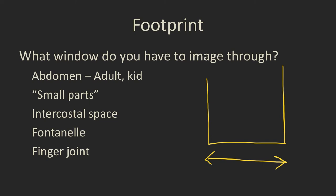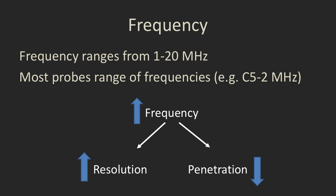So if you're trying to angle up to see the heart, you need one with a small footprint because it can go under the xiphisternum. If you're having to look through a fontanelle on a child, it needs a small footprint, although a wide field of view because you want to see a lot once you get through there. Or something like a finger joint where you need a very small footprint so that you can position the probe directly over it.